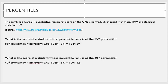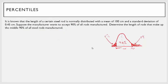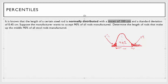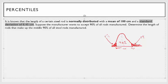Now let me give you a trickier problem. It's known that the length of a certain steel rod is normally distributed with a mean of 100 centimeters and a standard deviation of 0.5 centimeters. The manufacturer wants to accept 90% of all rods manufactured. Determine the length of rods that make up the middle 90% of all steel rods.